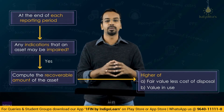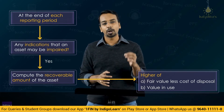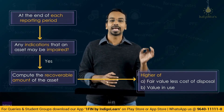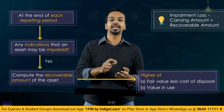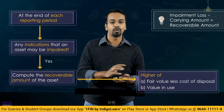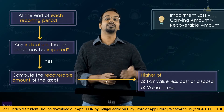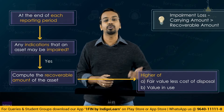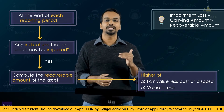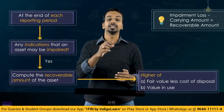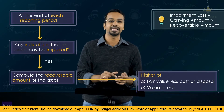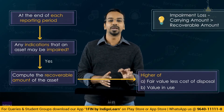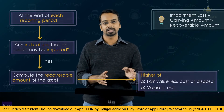After you have computed the recoverable amount, you will have to compare it with the carrying amount. If the recoverable amount is greater than the carrying amount, there is no impairment. But if the recoverable amount is less than the carrying amount, there is an impairment. The difference between the recoverable amount and the carrying amount is called impairment loss.